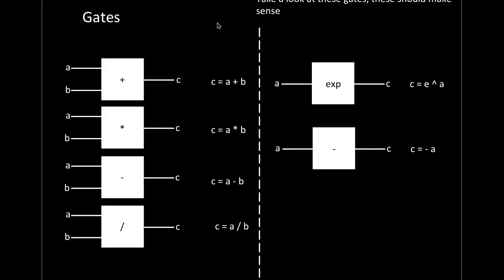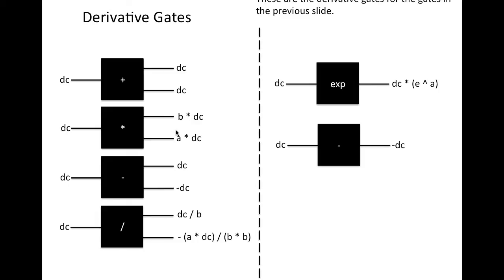Let's do the multiplication gate to make sure this is clear. What's the derivative of A times B with respect to A? A is treated as a variable, B as a constant, so the result is B. Think of it like 2x — the derivative of 2x is 2, where 2 is B and x is A. So the derivative outputs are B and A respectively. Try working through the other gates on your own. If you don't understand partial derivatives, check the Khan Academy link in the description.